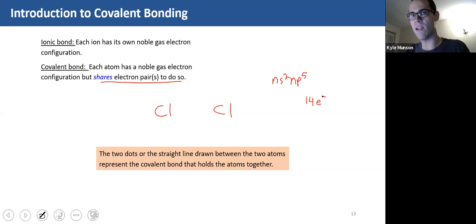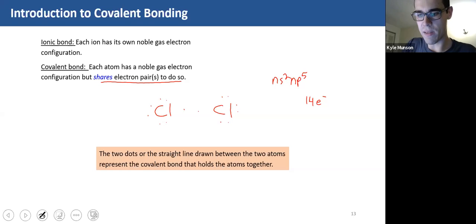They both can't have eight all to themselves. So what happens is they do this. So these are the electrons around there. One, two, three, four, five, six. So they each have six around them. And that leaves me two electrons to share. So those two electrons are going to go right in the middle there. And this is a bond.